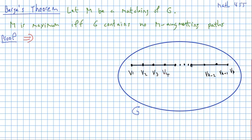Remember, an augmenting path is an alternating path, that is, a path whose edges switch between being in the matching and not being in the matching, such that the first and last edge are not in the matching.